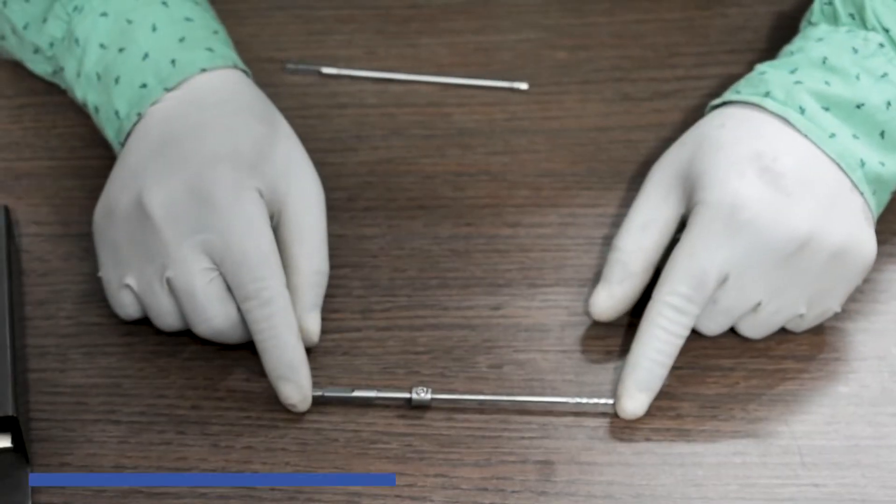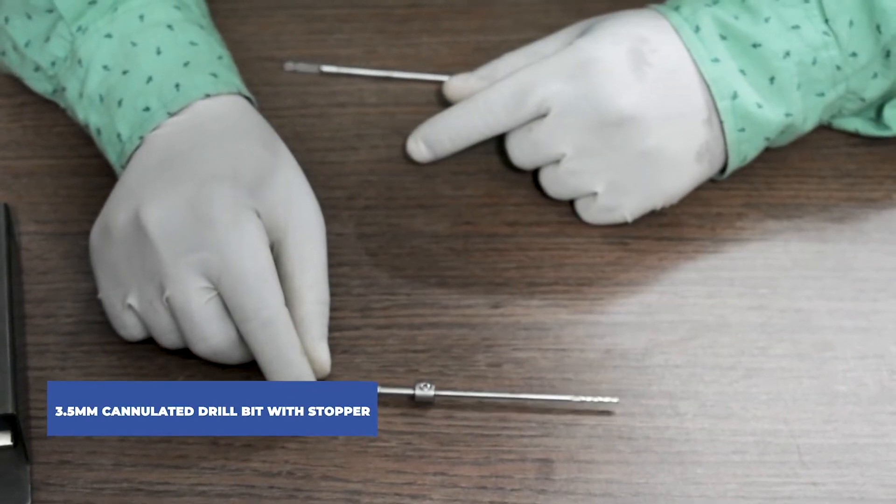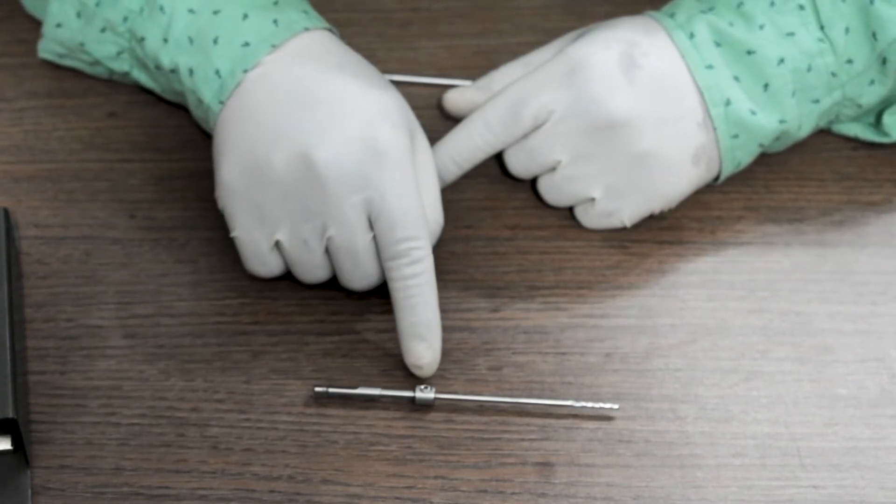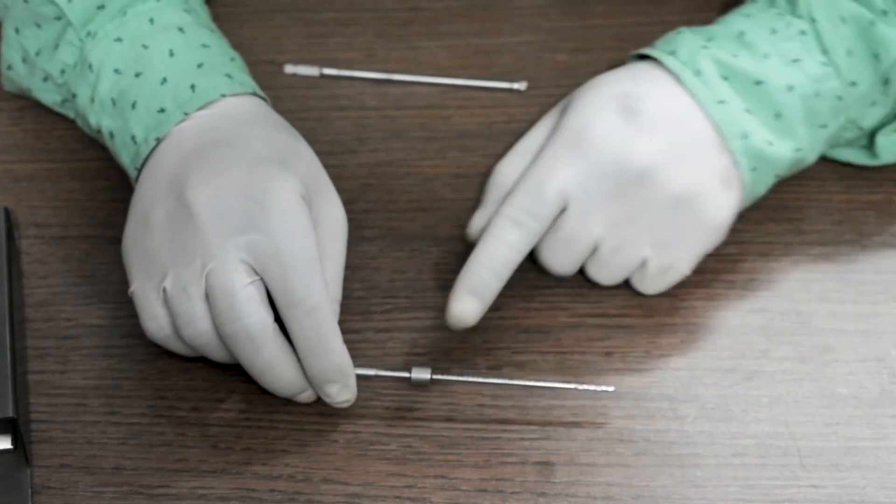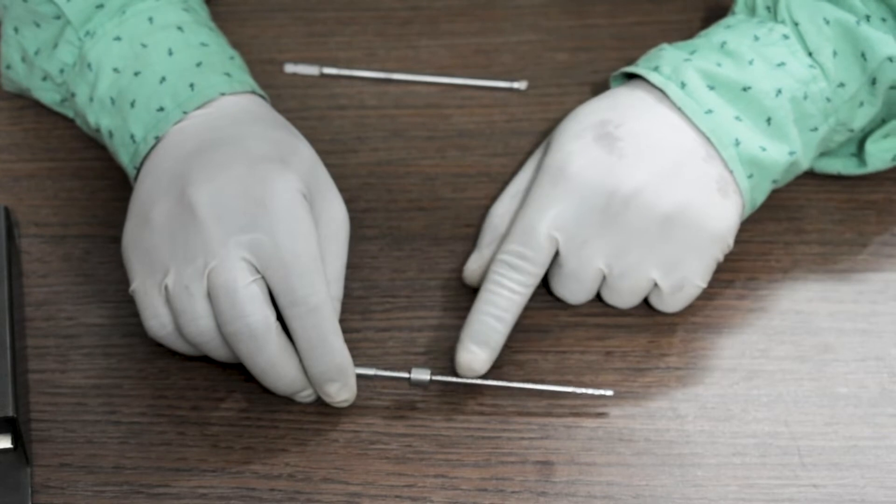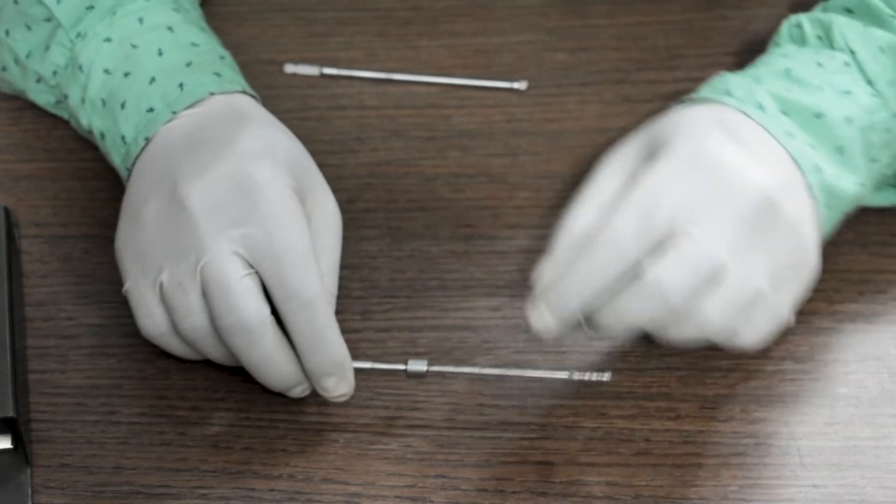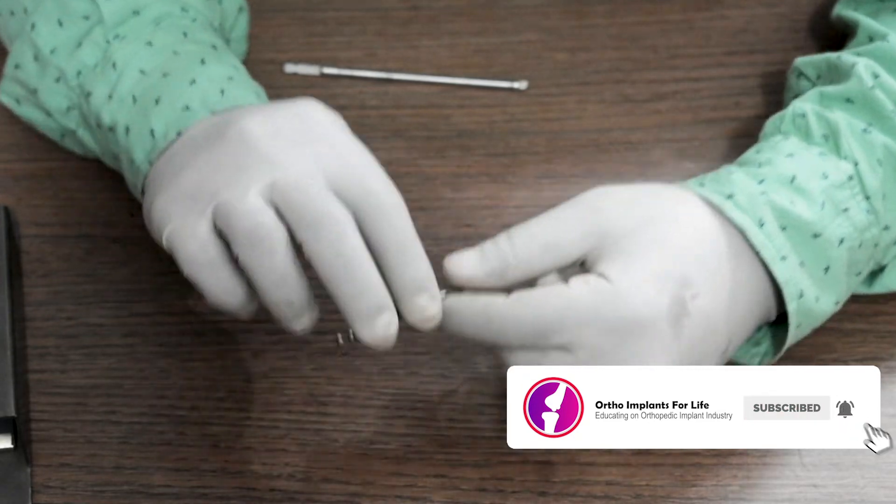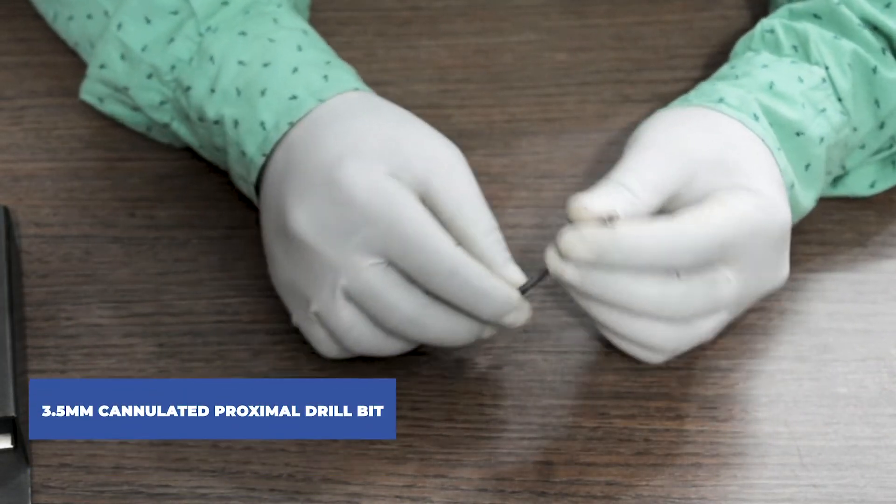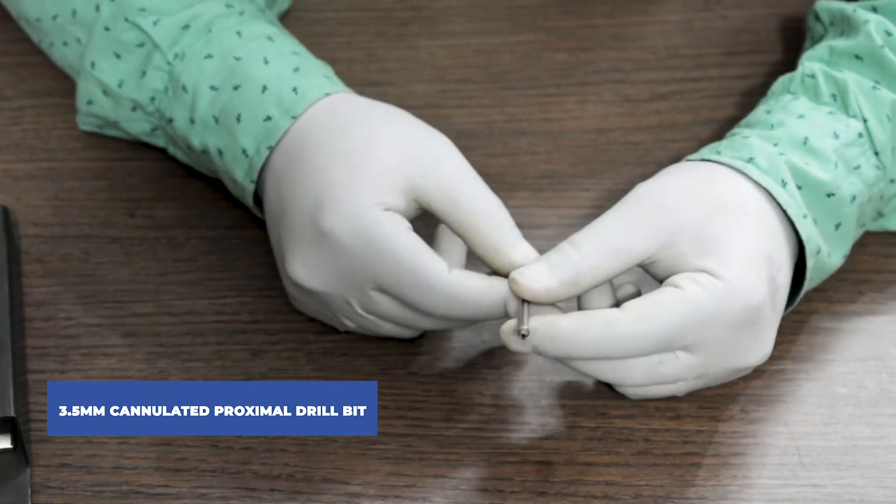This is a 3.5mm cannulated drill bit with stopper. This one is called the stopper. It also has a measurement scale marked on the side. As you can see, this is cannulated. This one is 3.5mm cannulated proximal drill bit.